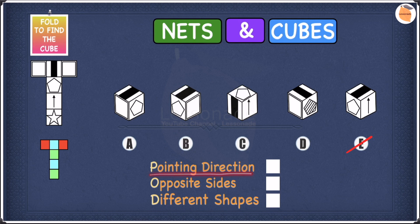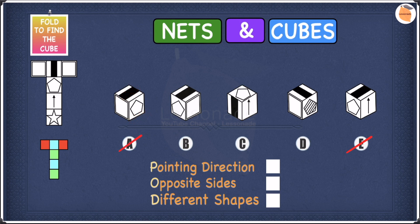We also have a stripe on the net, and this stripe is vertical towards the pentagon. If we find an option where the stripe is not vertical towards the pentagon, we cross it off. In A the stripe is horizontal towards the pentagon, which is wrong, so we cross off A. In B the stripe is vertical towards the pentagon, so B is fine. In C the stripe is vertical towards the pentagon, so C is fine. In D the stripe is also vertical towards the pentagon, so D is fine.